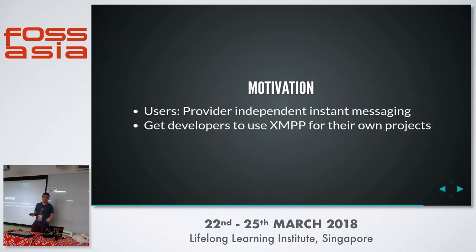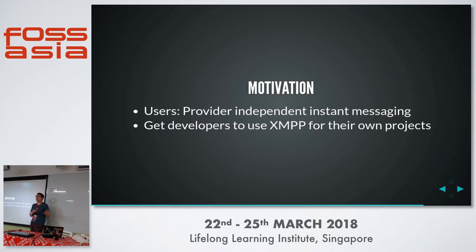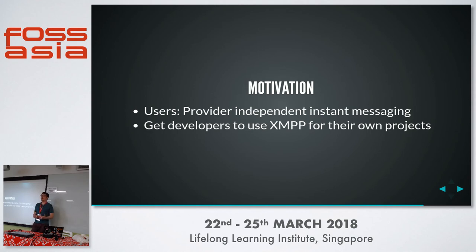So why did I do all that? From a user perspective, I want to provide an independent instant messaging solution so you don't have to rely on these monopolies. With WhatsApp, if they change something you are stuck with them. But in a federated ecosystem where you have free choice of server and client, when a client develops in a direction you don't like, you just pick a different client — or if it's open source, fork it and go a different direction. Same with providers: if a provider shuts down or implements a new privacy policy you don't like, you can pick a different provider but still use your favorite client.